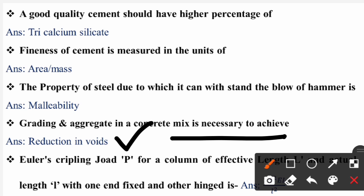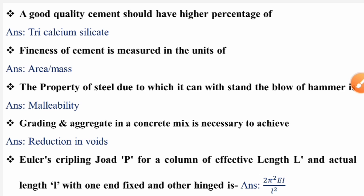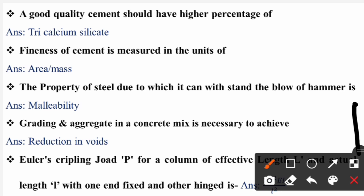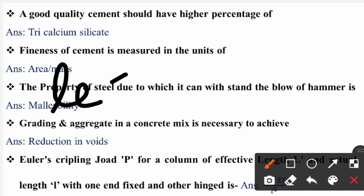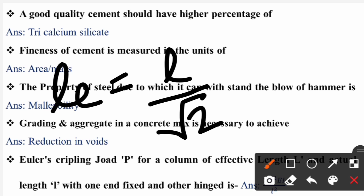Going to the next question: Euler's crippling load P for a column with one end fixed and another end hinged — what is the effective length? For one end fixed and one end hinged, the effective length is L by root 2. The formula for Euler's crippling load P is pi squared E I divided by L_e squared.